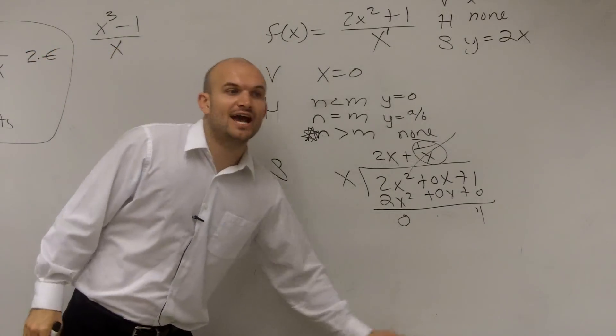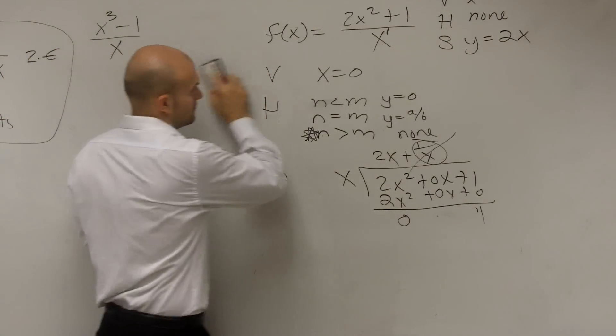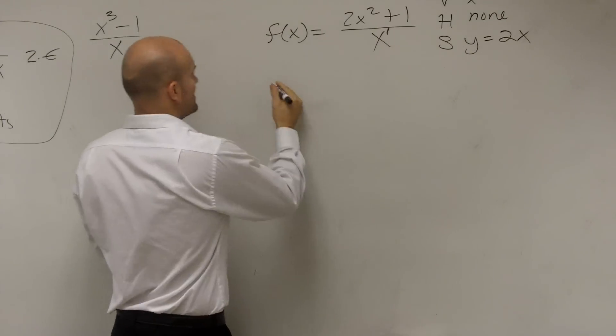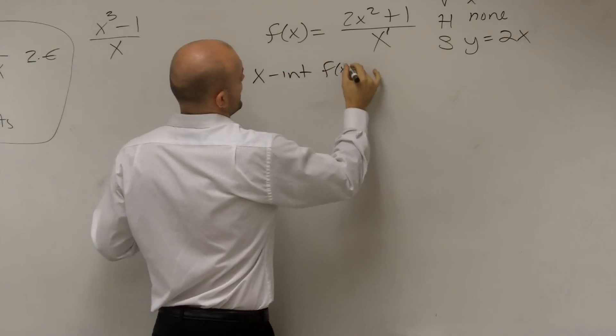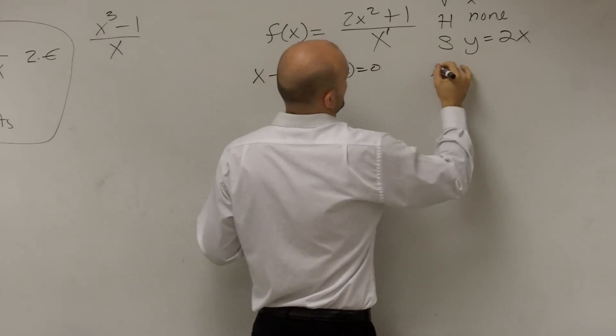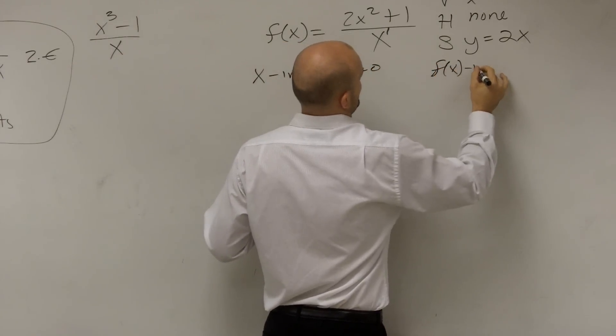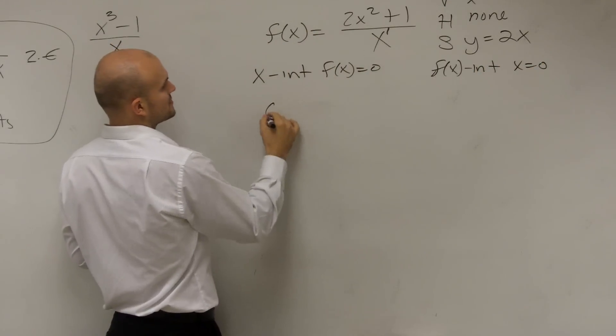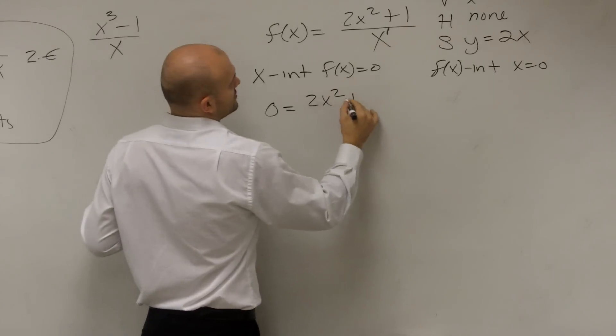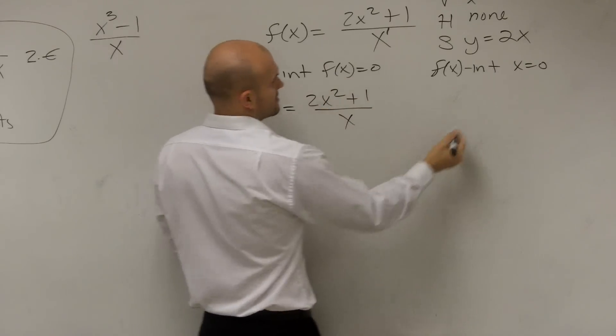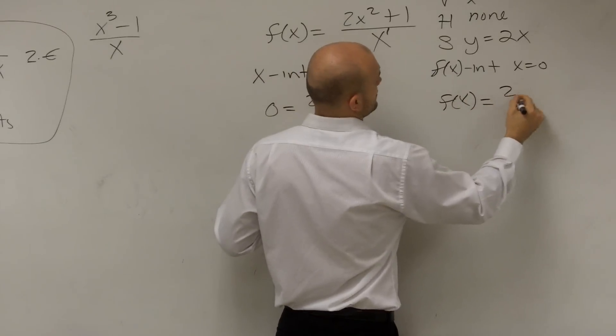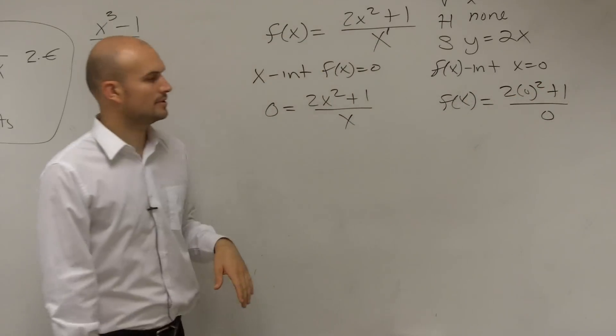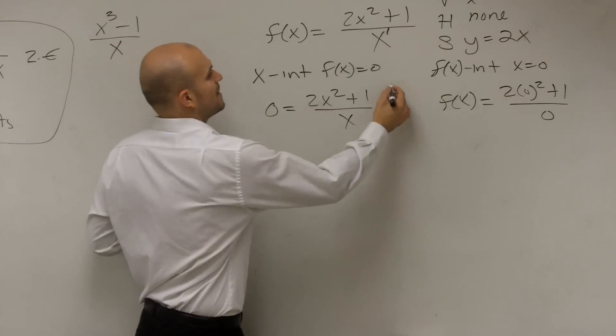Now the next thing is let's find our x and our f of x intercepts. So x intercept means f of x equals 0. f of x intercept, x equals 0. So x intercept, f of x equals 0. 0 equals 2x squared plus 1 divided by x. This one we have f of x equals 2 times 0 squared plus 1 divided by 0. Here, remember, how do you solve? You've got to get the x off the bottom, or your denominator off.